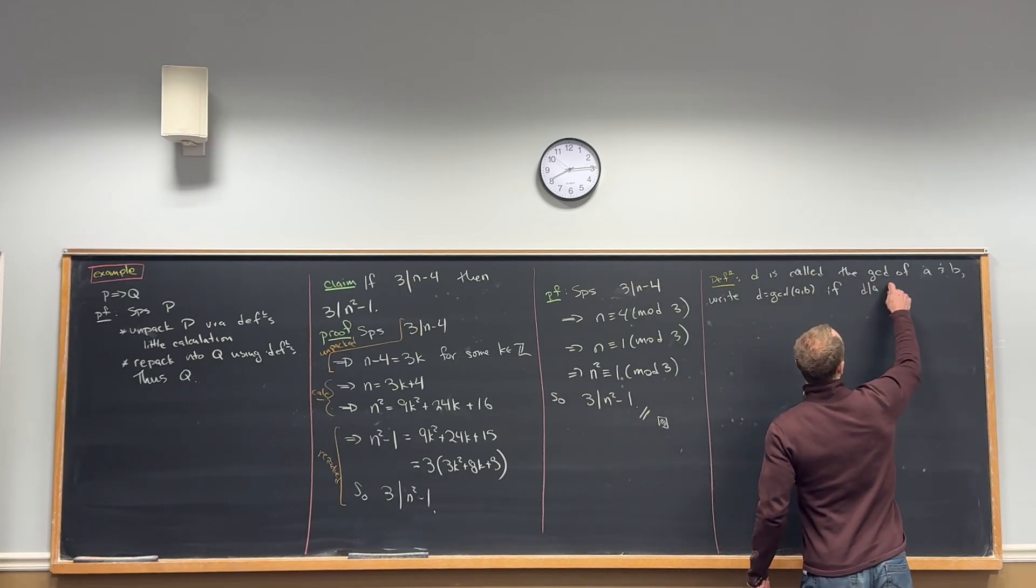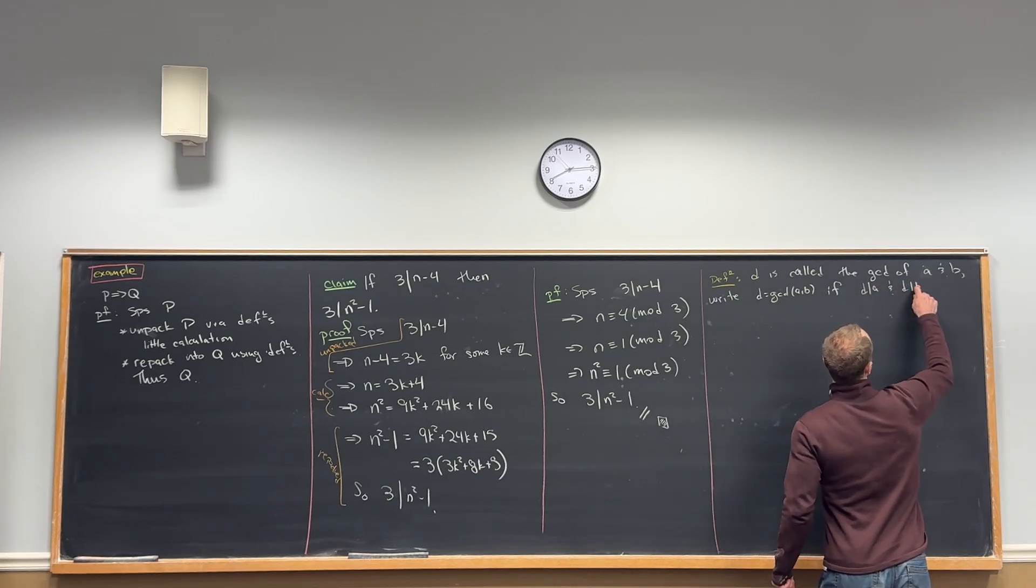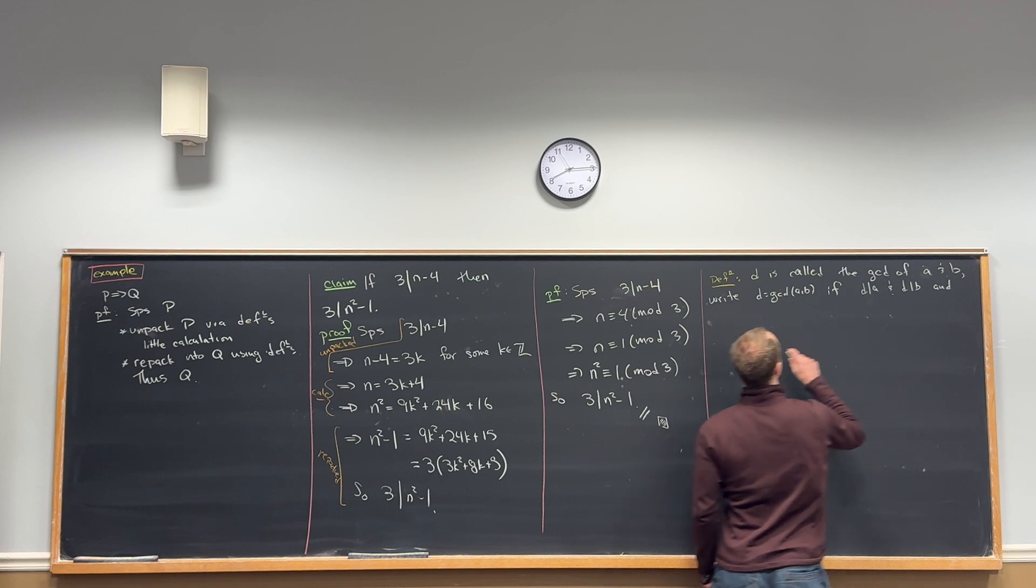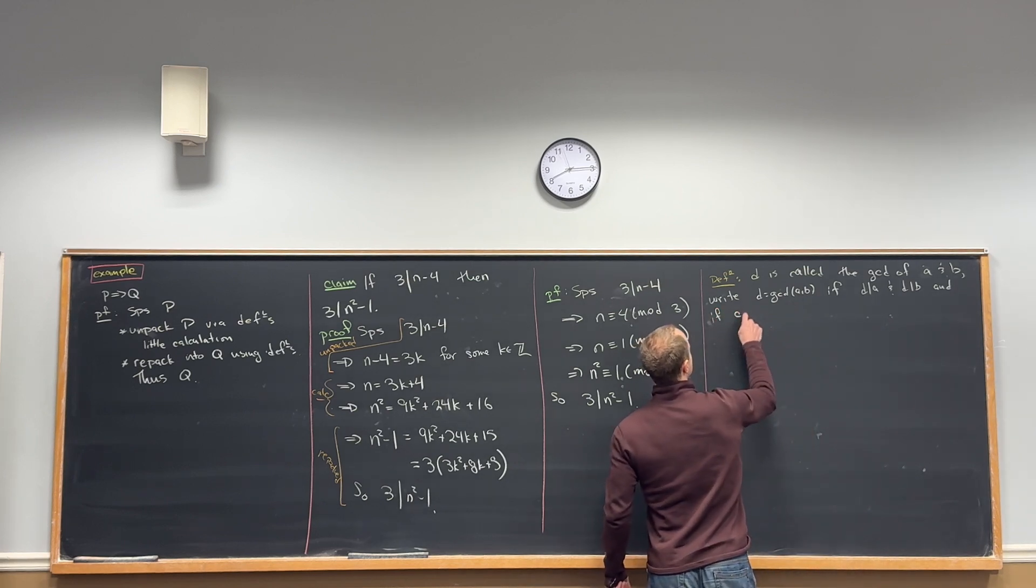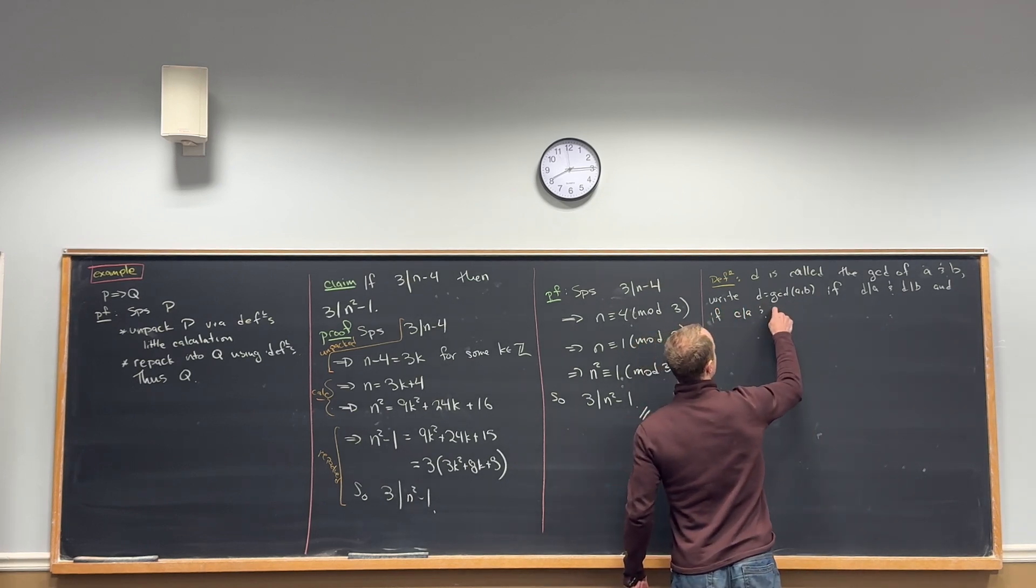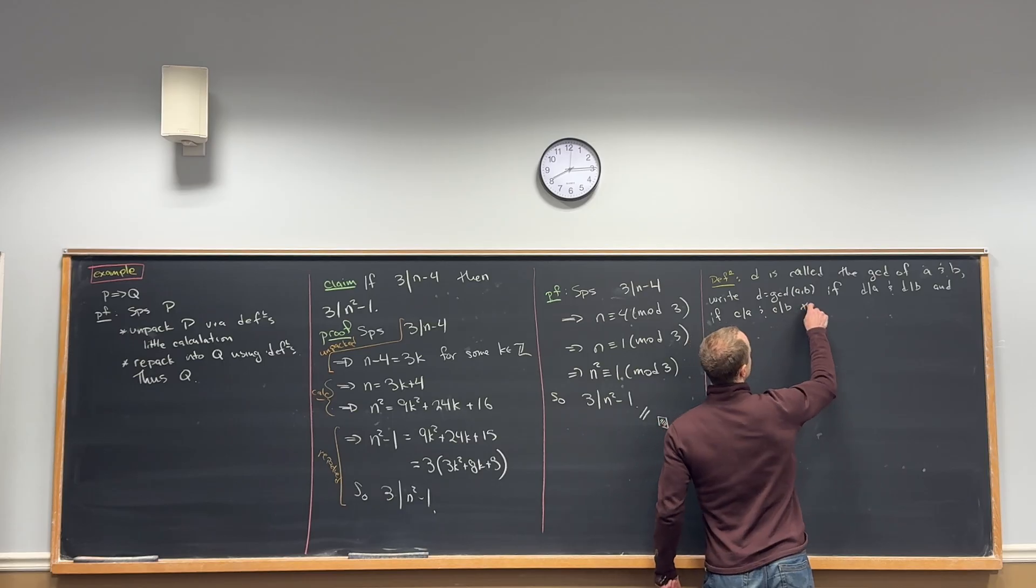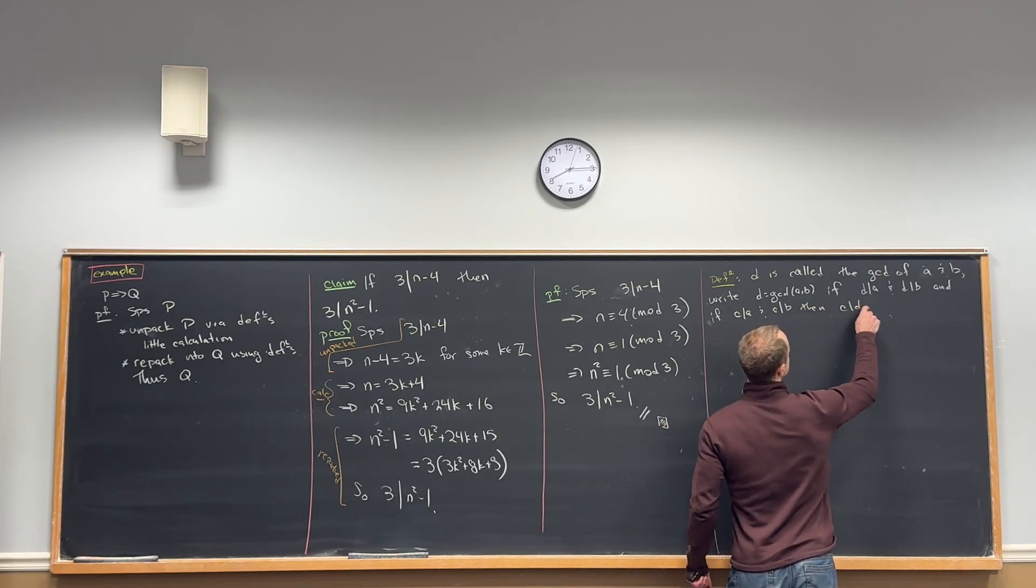If D divides A and D divides B, and if C also divides A and C also divides B, then C divides D.